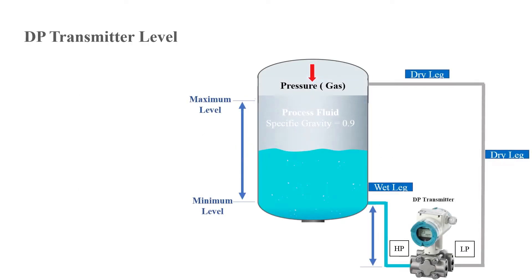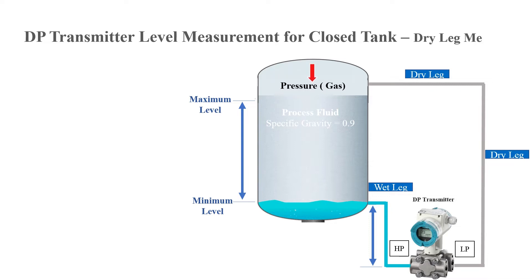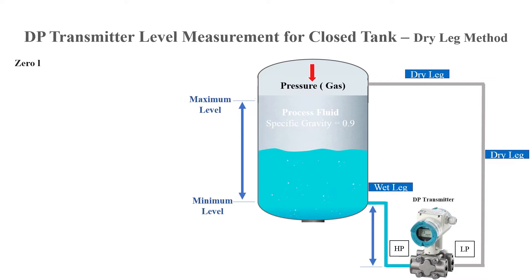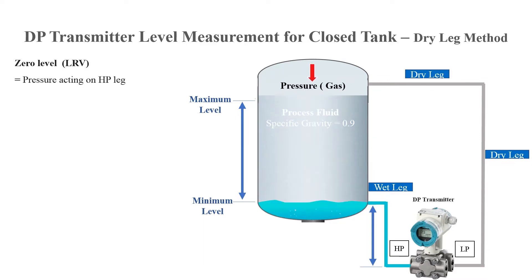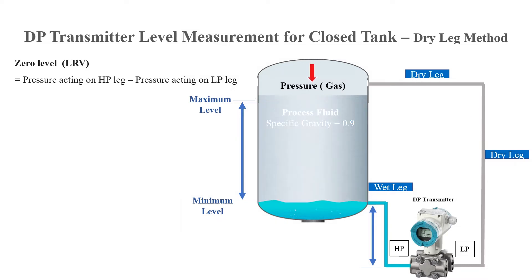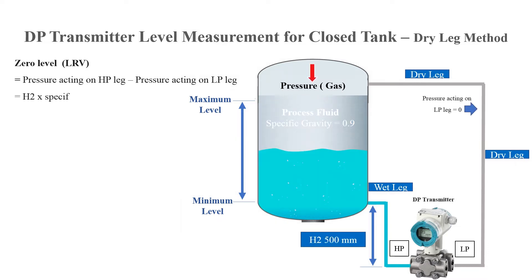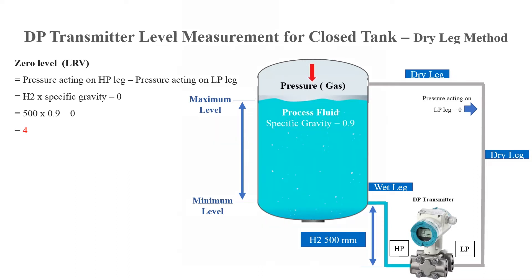DP transmitter level measurement for closed tank, dry leg method. The calculation of the DP transmitter in this case will be as follows: the lower range value equals pressure acting on the HP leg minus pressure acting on the LP leg — h2 multiplied by the specific gravity of the measured liquid minus zero — so the result will be 450 millimeter water column.